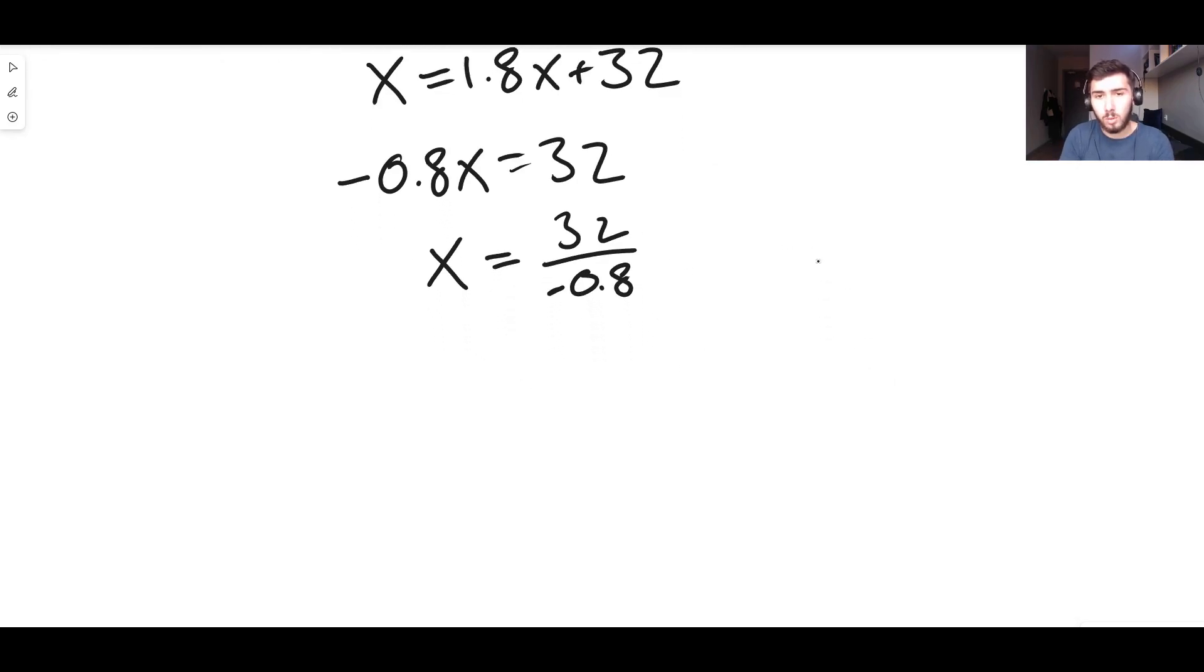We just need to figure out what this is. You can plug it into a calculator, but if you want to do this manually, you might be like, how do I divide by 0.8? First of all, take the negative out, so put the negative there, and then we'll deal with the fraction. Leave the 32 on the top, and instead of writing 0.8, we can just write 4 over 5, because 0.8 is 4 over 5.